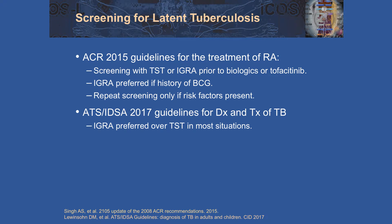The ACR 2015 guidelines for the treatment of RA recommend screening with a skin test or QuantiFERON before biologics or tofacitinib, and state that the QuantiFERON is preferred if the patient has received BCG. The American Thoracic Society and IDSA guidelines also prefer the QuantiFERON over the skin test.